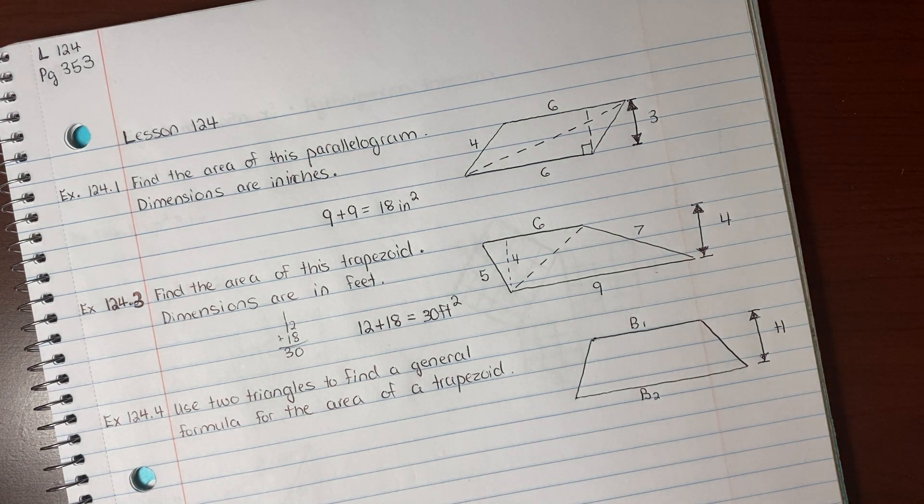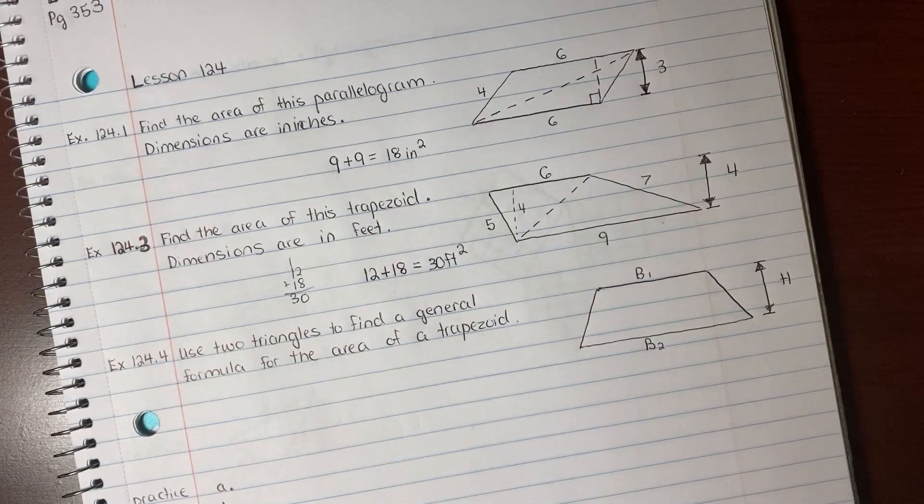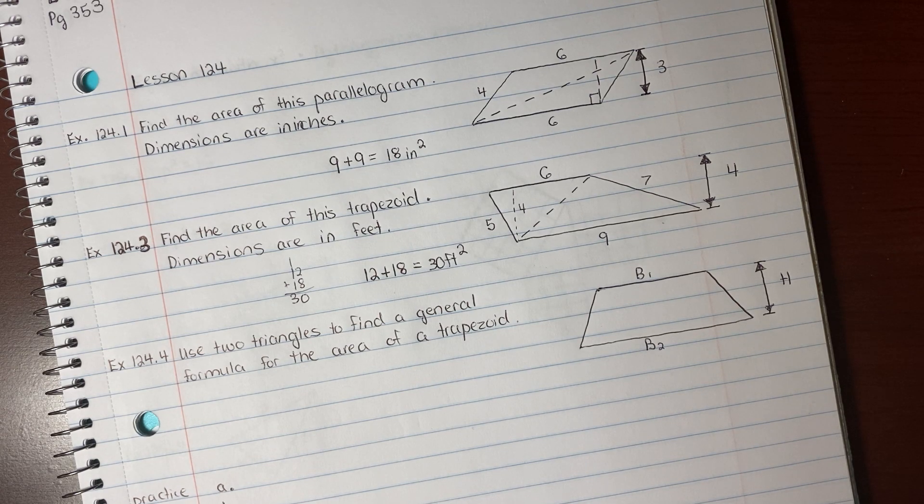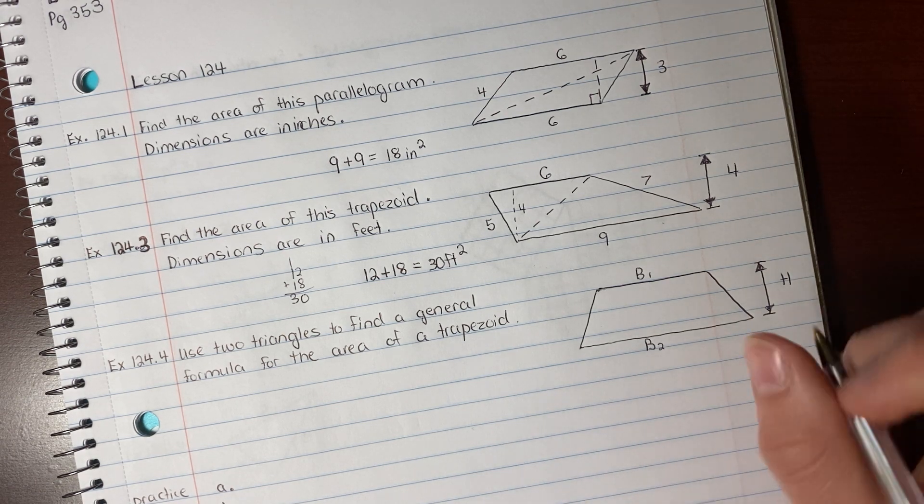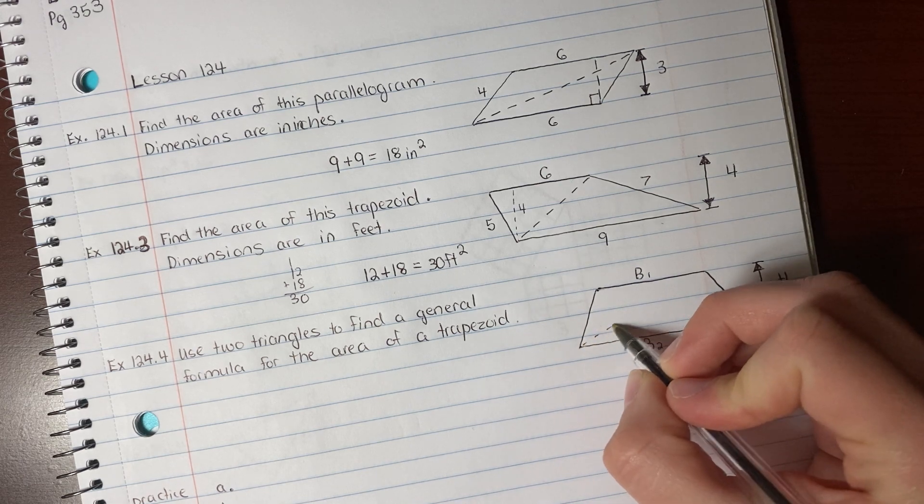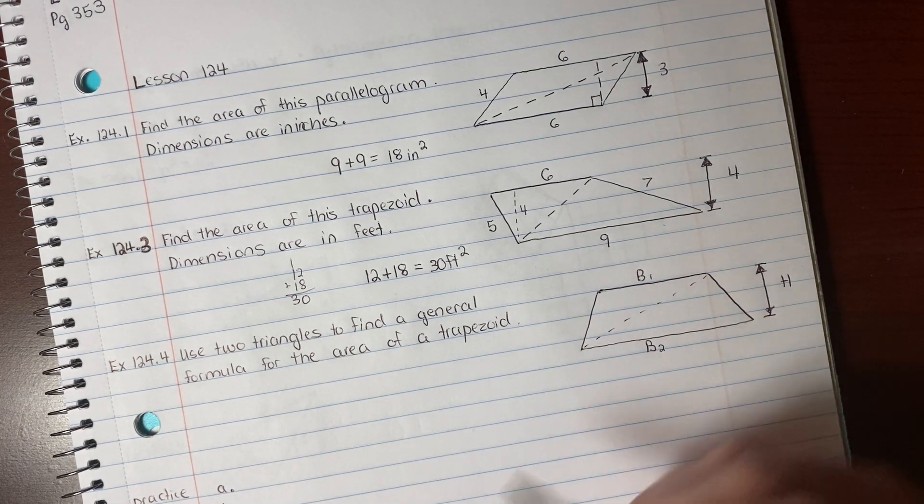For 124.4, this says use two triangles to find a general formula for the area of a trapezoid. So we're going to find the formula, not the actual numerical value. So we can draw our dotted line.